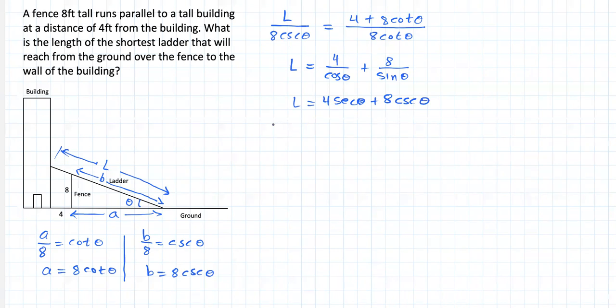Next step, we're supposed to take the derivative of L with respect to theta, set it equal to zero, and solve for theta, right? That is supposed to give us a great candidate to minimize the length of the ladder. So let's do that. Derivative of this should be 4 secant of theta multiplied by tangent of theta. Derivative of this second term is minus 8 cosecant of theta multiplied by cotangent of theta. That together equal to zero, we're going to solve for theta.